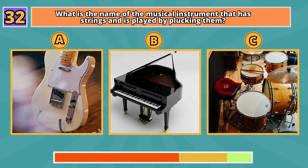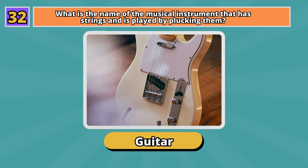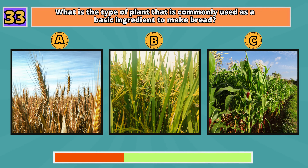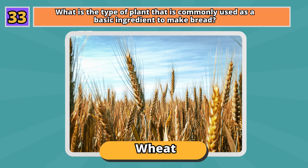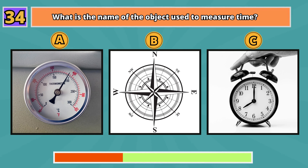What is the name of the musical instrument that has strings and is played by plucking them? What is the name of the type of plant that is commonly used as a basic ingredient to make bread? Wheat.